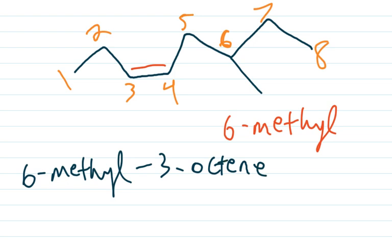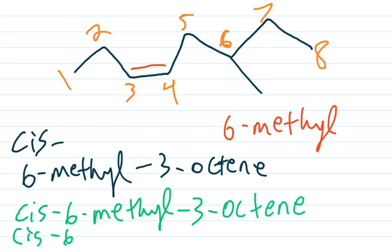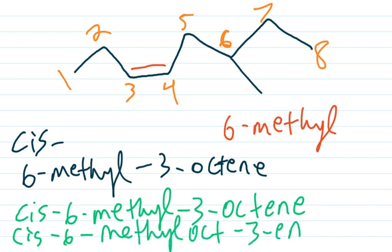Now we focus on cis versus trans. Looking at the double bond, one group points up on this side and the group on the other side also points up — they're on the same side, so this is cis. To finish naming the molecule we add 'cis' at the front. The full IUPAC name is cis-6-methyl-3-octene, or equivalently cis-6-methyl-oct-3-ene.